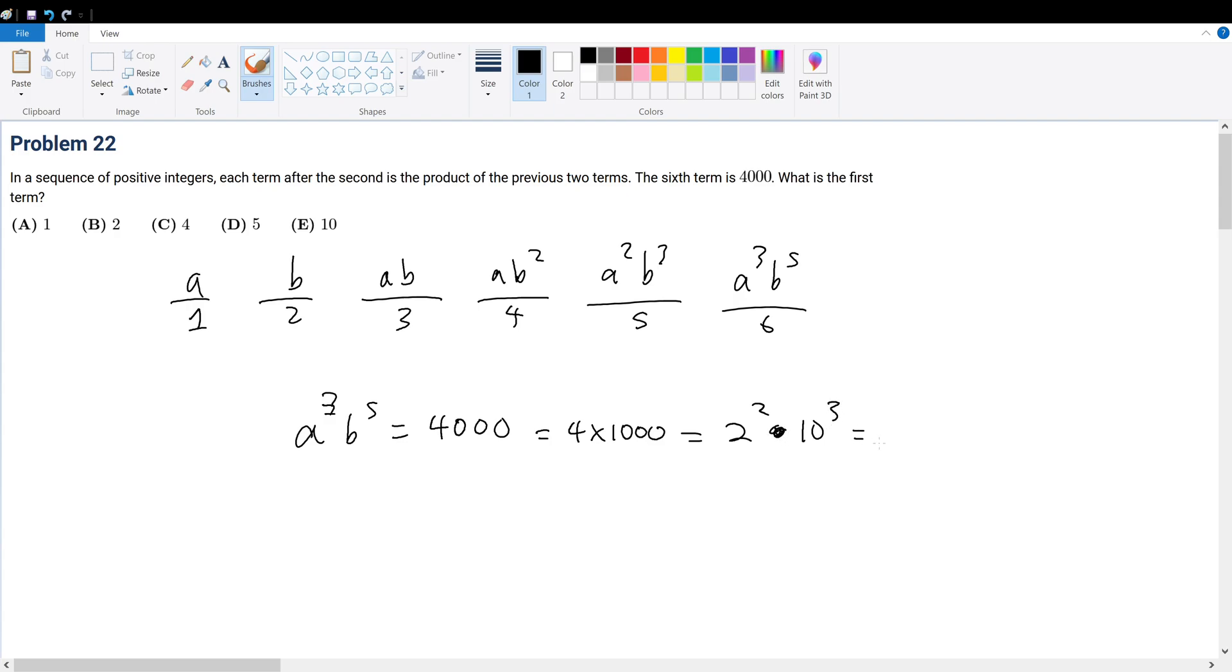What is 2 squared times 10 cubed? Well, 10 cubed is 2 times 5, so that's 2 cubed times 5 cubed, which is the same thing as 2 to the fifth times 5 to the third.